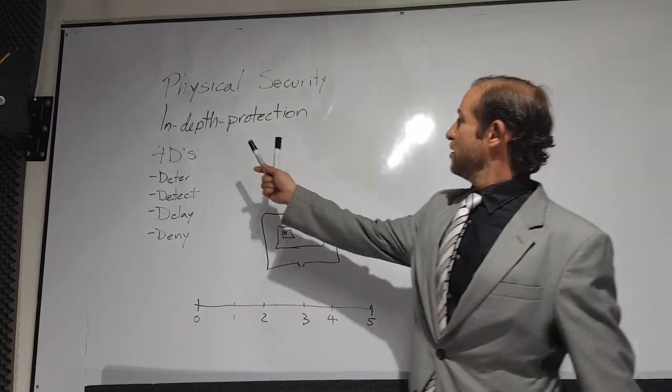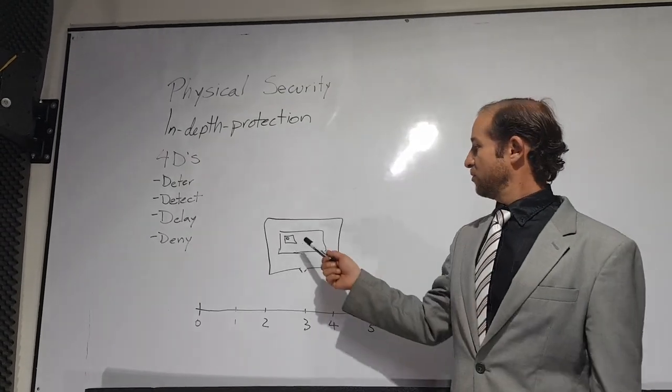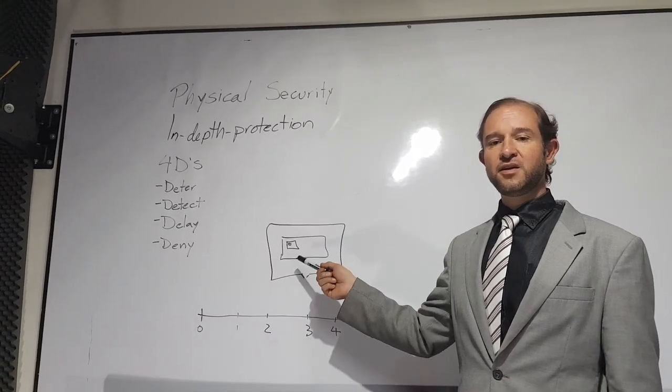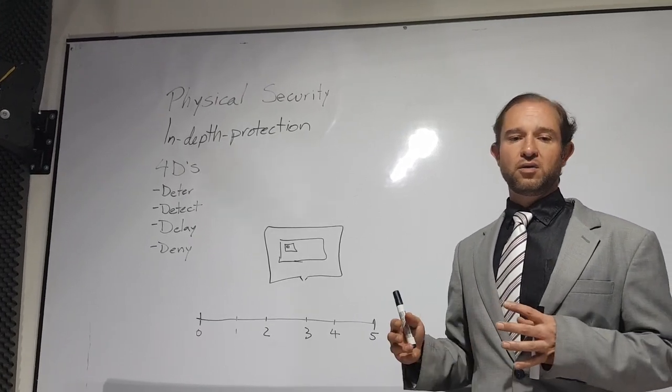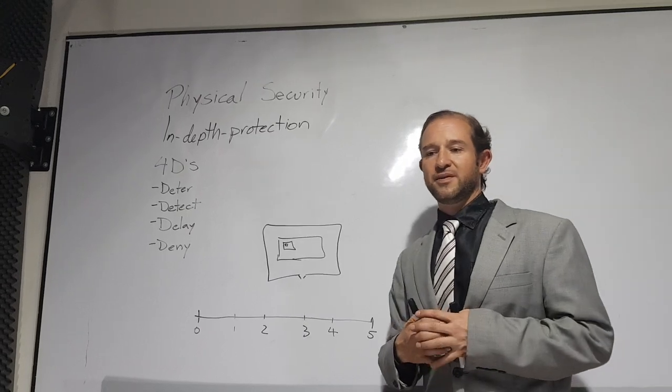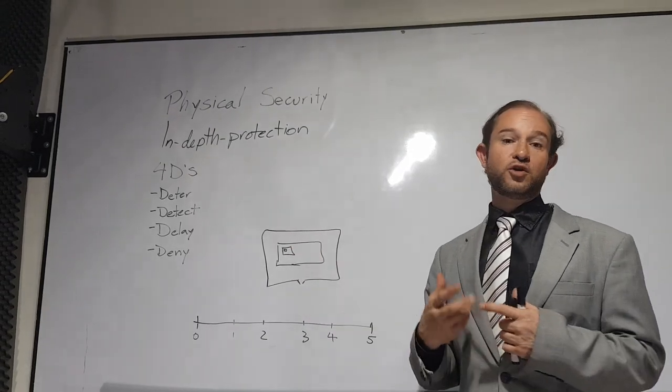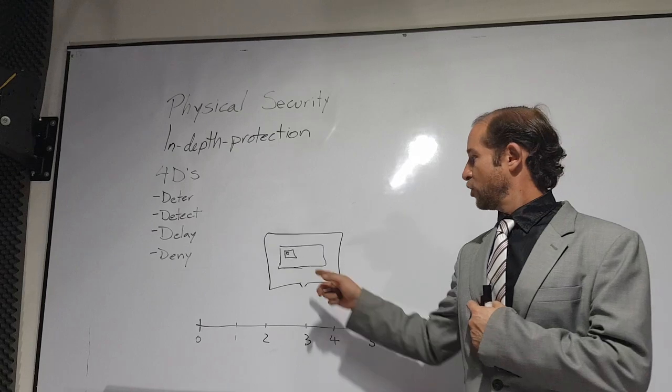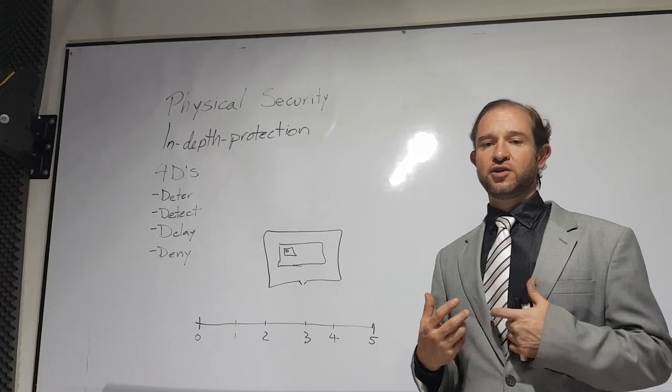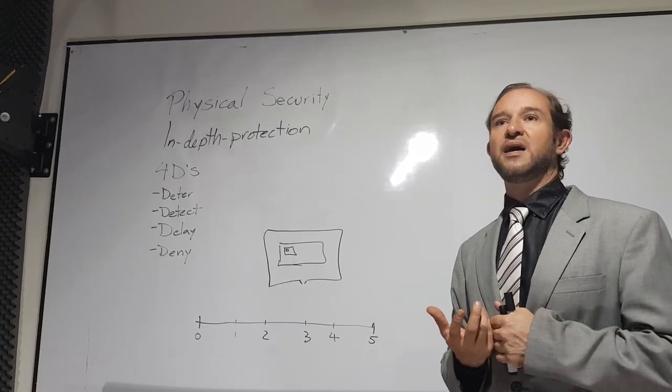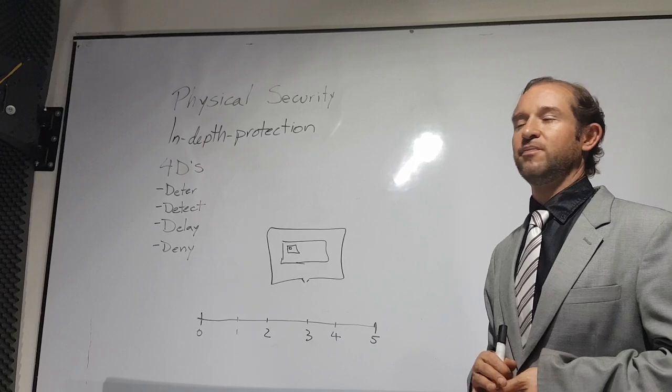The in-depth protection is a theory that suggests that the precise risks inside the facility need more powerful barriers against intruders because they are more attractive and have a higher risk. So I have to put stronger and bigger measures to protect the assets that were identified as a crime risk.